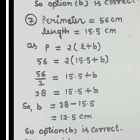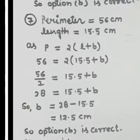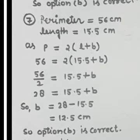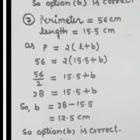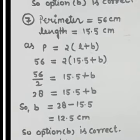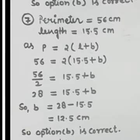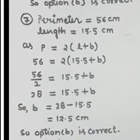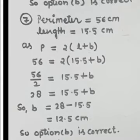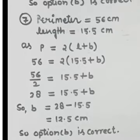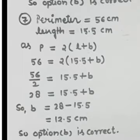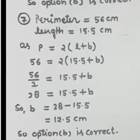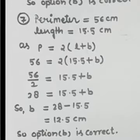Question number 7: the perimeter is given as 56 cm and the length of one side is 15.5 cm. The perimeter of a rectangle is 2(L + B). Placing values: 56 = 2(15.5 + B). So 56 ÷ 2 = 28 = 15.5 + B. Therefore B = 28 − 15.5 = 12.5 cm. Option B is correct.